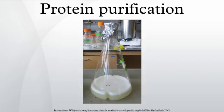Pepsin and urease were the first proteins purified to the point that they could be crystallized. Preliminary steps: Extraction. Depending on the source, the protein has to be brought into solution by breaking the tissue or cells containing it. There are several methods to achieve this: repeated freezing and thawing, sonication, homogenization by high pressure, filtration, or permeabilization by organic solvents. The method of choice depends on how fragile the protein is and how sturdy the cells are.